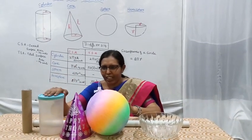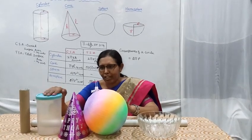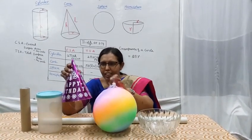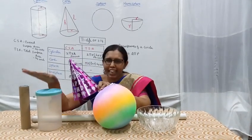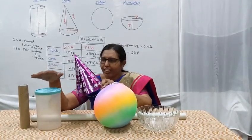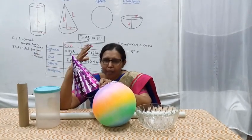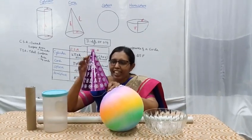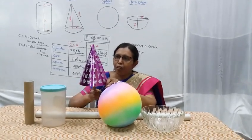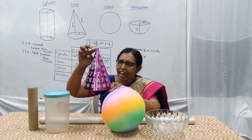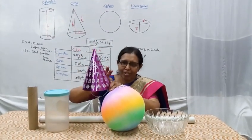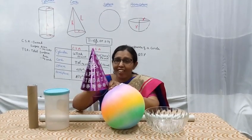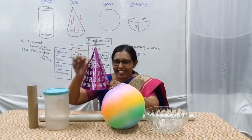For a cylinder, TSA is the total surface area. For a cone, the key dimensions are radius, vertical height, and slant height. Using these we can derive the slant from radius and vertical height.